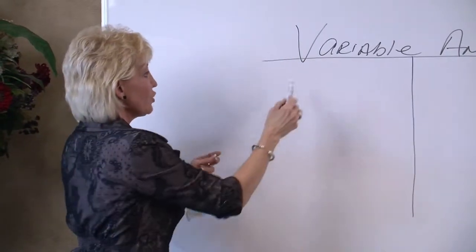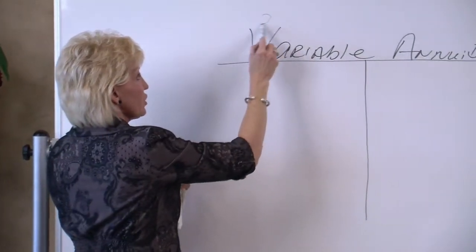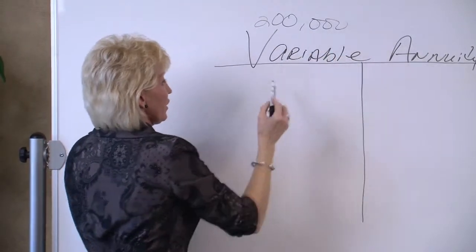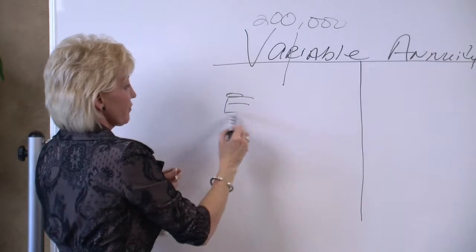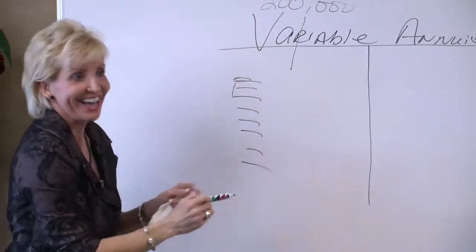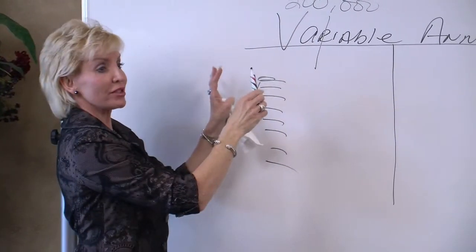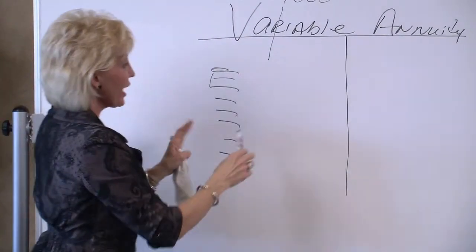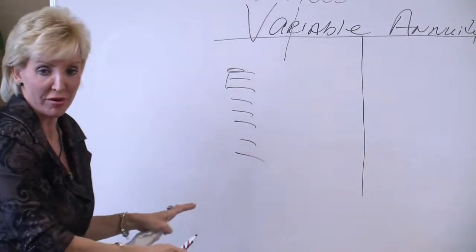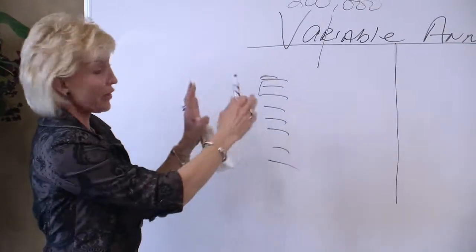So when you put in, let's say, $200,000, it's going to go into these various funds, and as the market goes up, your value is going to go up. The market goes down, the value goes down, and they have a pool of funds that you can choose from inside the variable annuity.